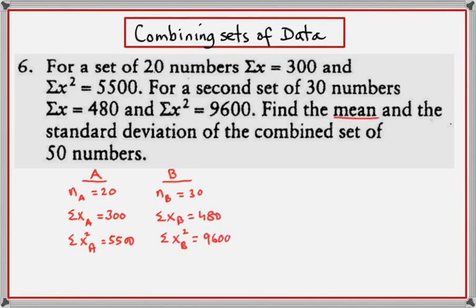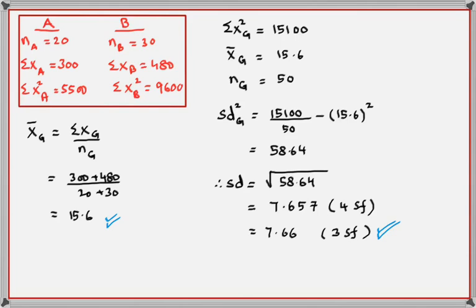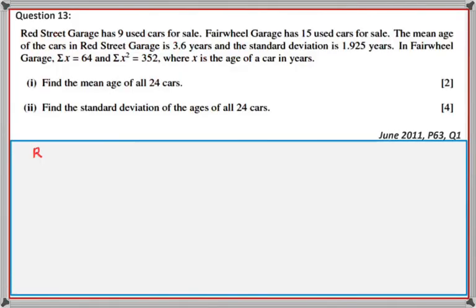Similarly, add Σx² of the first group to Σx² of the second group. x̄ for the whole group = (300 + 480) / 50. Σx² for the whole group = 5500 + 9600. x̄ for the whole group is 15.6; n = 50, so find the standard deviation. Always work in four significant figures, show the working, and give the final answer to three significant figures. If an answer from part one is used in part two, always use the unrounded value.